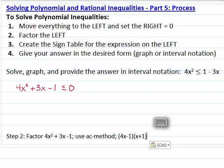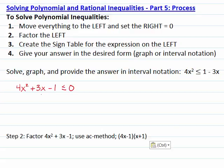Then we will factor the left, which is a quadratic, so we are going to use the AC method. The factorization is going to be (4x minus 1) times (x plus 1) less than or equal to 0.